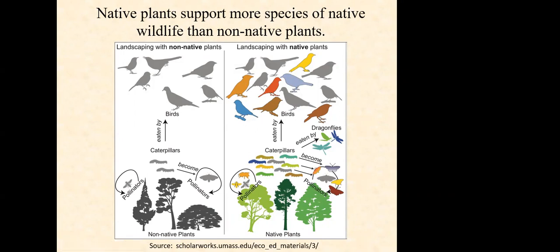I found this interesting diagram — very visual — on why native plants support more species of native wildlife than non-native plants. This was out of UMass. The information that went with it was that there's a 50% higher abundance of native birds when you use native plants in your landscape, nine times higher abundance of rare birds, three times more butterfly species, and two times higher abundance of native bees just from using native plants. I thought that was pretty interesting.